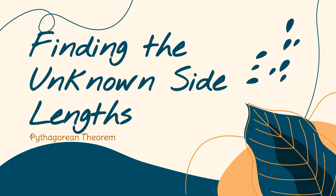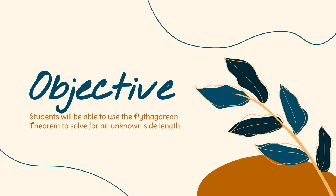Good morning and welcome to 8th grade math class. Today we're going to be talking about finding the unknown side lengths of the Pythagorean theorem. We are going into the unknown — we will be solving for the unknown. Our objective for today is that students will be able to use the Pythagorean theorem, which is A squared plus B squared equals C squared. We will be using this for every single problem that we do today.